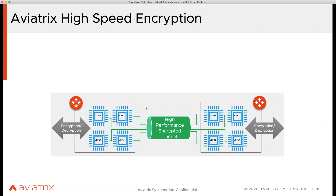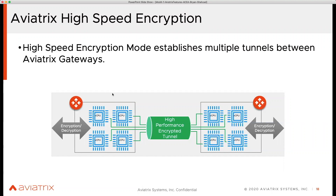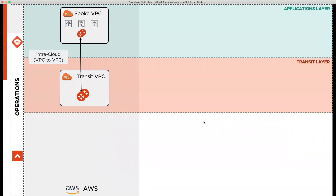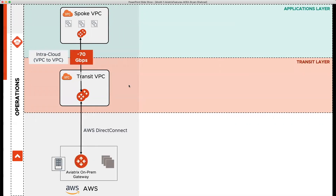We are utilizing all the CPU cores. When you look at the use cases and problems we solve for customers — when connecting a transit to a spoke VPC and you want encryption using a third-party mechanism, it's only 1.25 GB. But in our case, you can go all the way up to 70 gig, which is even greater than AWS TGW. When connecting to on-prem, it's line rate — so if you have a 10 gig link, we provide 10 gig line-rate throughput, all encrypted.